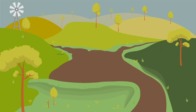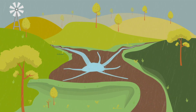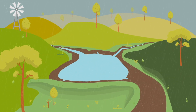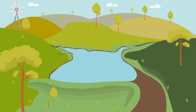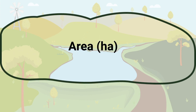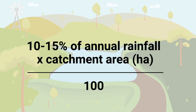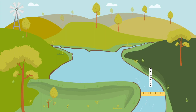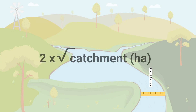Dams can be used to control gully head erosion by drowning them out. However, when constructing a dam it is important that an adequate bywash is constructed at the same time. It is a good idea to match the capacity of the dam to the catchment size. A rule of thumb is that the capacity should be about 10–15% of the annual rainfall times the catchment area in hectares. The bywash is a crucial part of dam construction — it should be wide enough so that flows through it are shallow and slow to prevent erosion. The bywash width should be two times the square root of the catchment area in hectares.